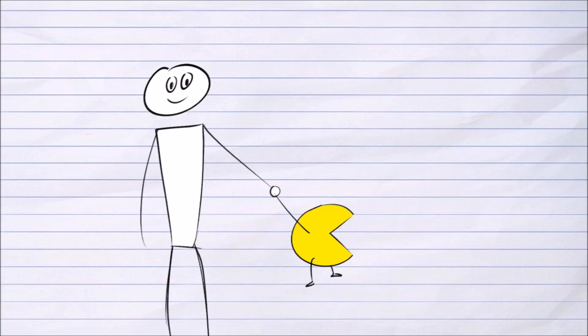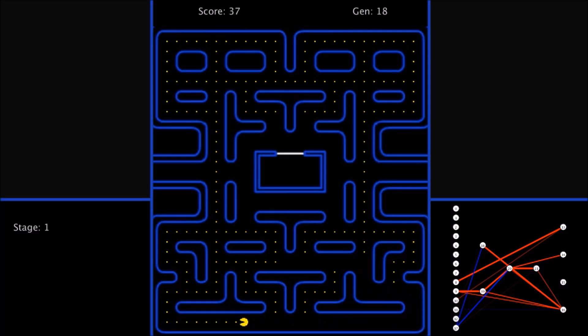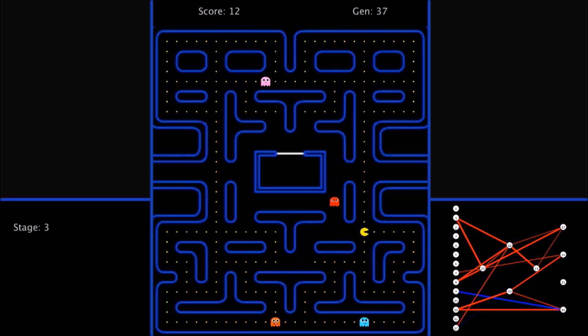The first stage was with no ghosts, no big dots, just Pac-Man learning to navigate the maze. The only way it dies is if it stops moving or doesn't eat any pellets within a certain amount of time. After about 20 generations of learning, we introduce the ghosts, but we keep the big dots out of there.